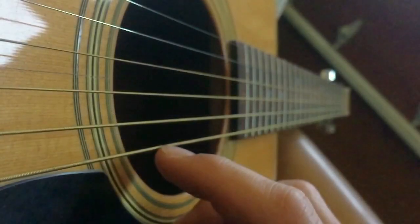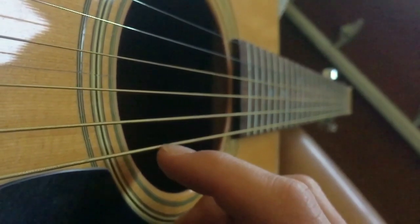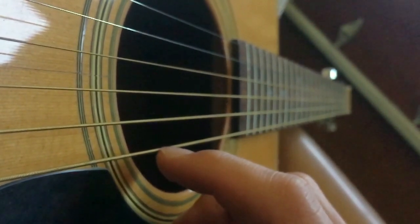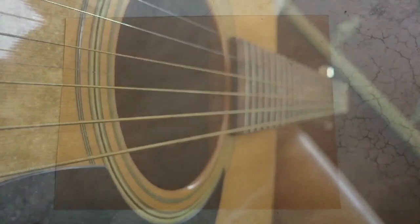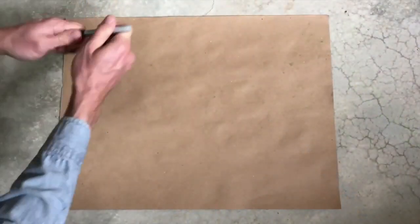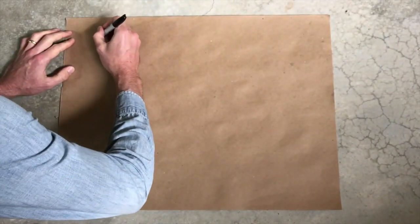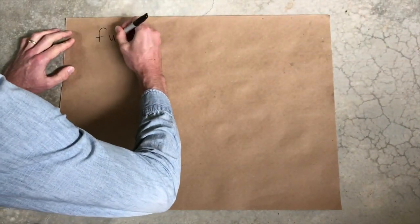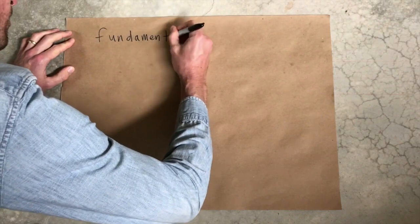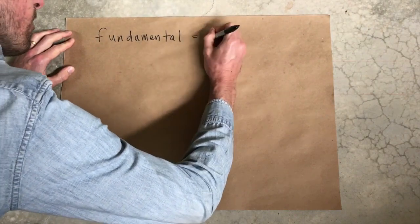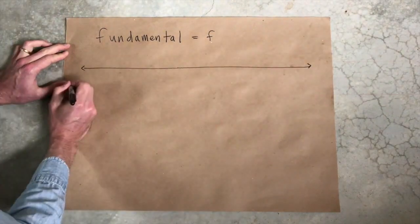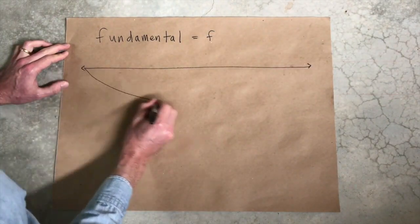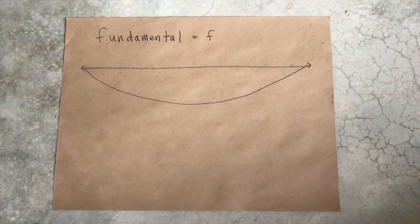To understand this mathematical relationship, we must first define the fundamental frequency. The fundamental is the vibration that occurs when the whole of an instrument resonates. The fundamental frequency of a guitar string is produced when the string vibrates up and down as a whole. We perceive this resonance as the dominant pitch.